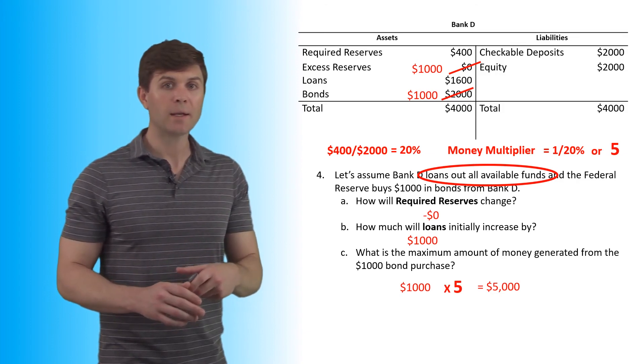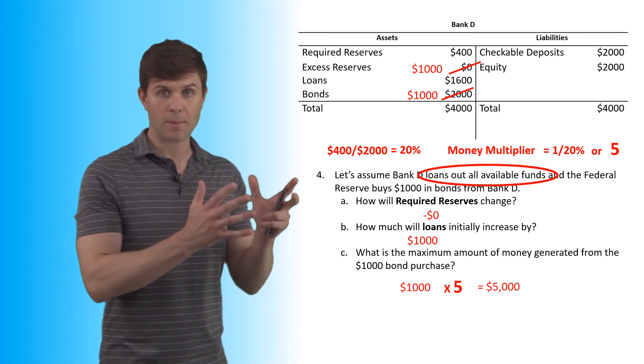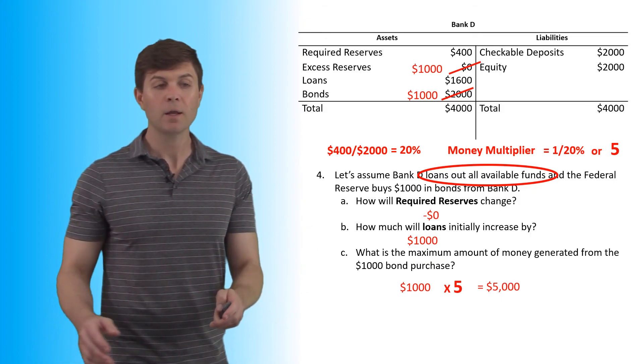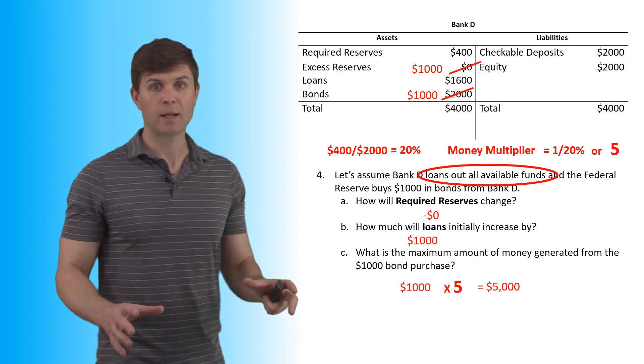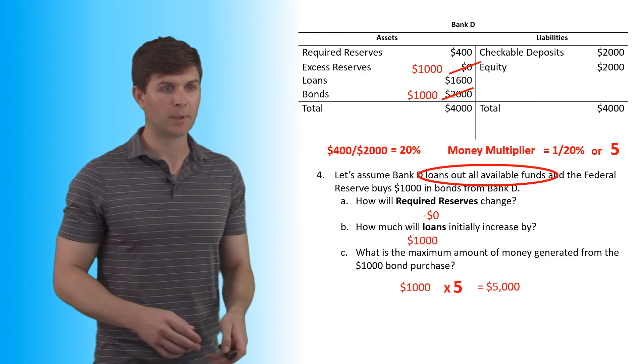So we don't have to worry about taking away that initial deposit from this. It is simply the bond purchase adds to the money supply, as does the multiplier. So it's a full $5,000. When it's a bond purchase, the full amount ends up being added to the money supply.